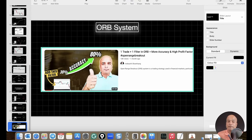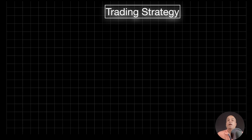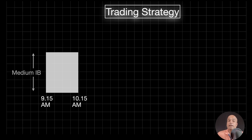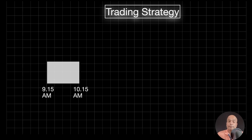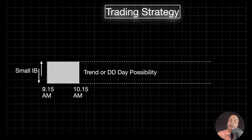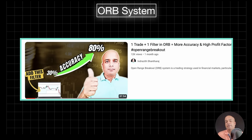To summarize the strategy: if you get a wide IB, deploy a short straddle or short strangle strategy. If you get a medium IB, there is a high possibility of a normal variation day — look for open range breakout trades; long if it breaks upside, short if it breaks lower. If you get a small IB, anticipate a trend day or double distribution day and again deploy the ORB strategy accordingly. This is how you can manage your trades using day structures.